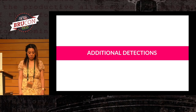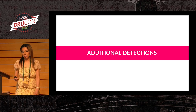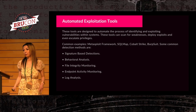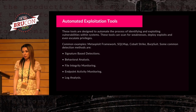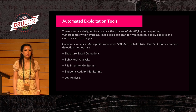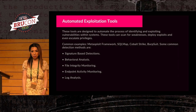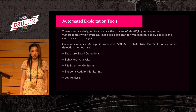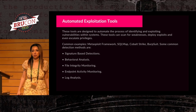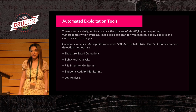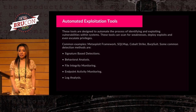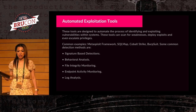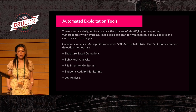Additional detections — automated exploitation tools. These tools are designed to automate the process of identifying and exploiting vulnerabilities within systems. They can scan for weaknesses, deploy exploits, and even escalate privileges. There is a group of people within the industry propagating the idea that hackers do not use automated exploitation tools — and that needs to stop. A hacker is going to use whatever they want to get you any way they can. You do need your EDR to pick this up. Common examples: Metasploit, SQLMap, Cobalt Strike, Burp. How do we detect them? Signature-based detections, behavioral analysis, file integrity, endpoint monitoring, and analyzing your logs.